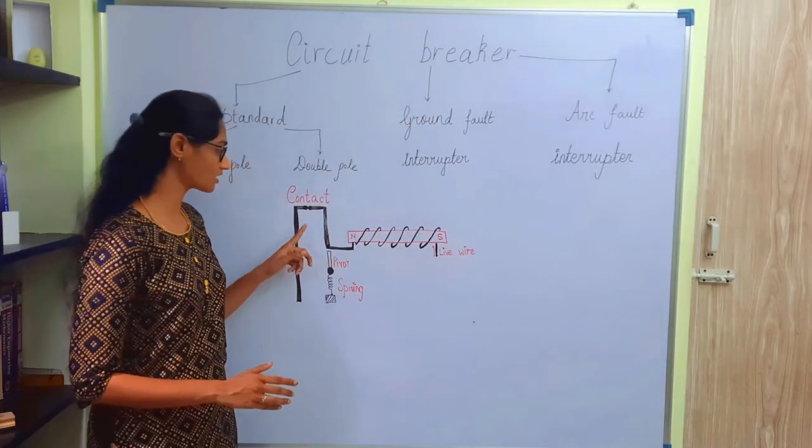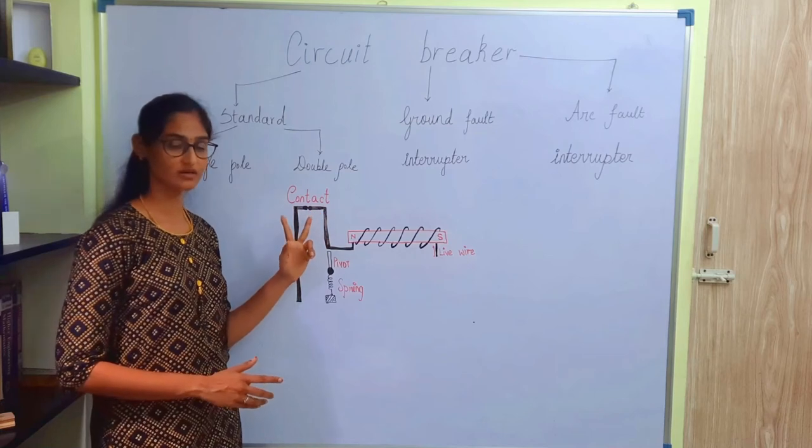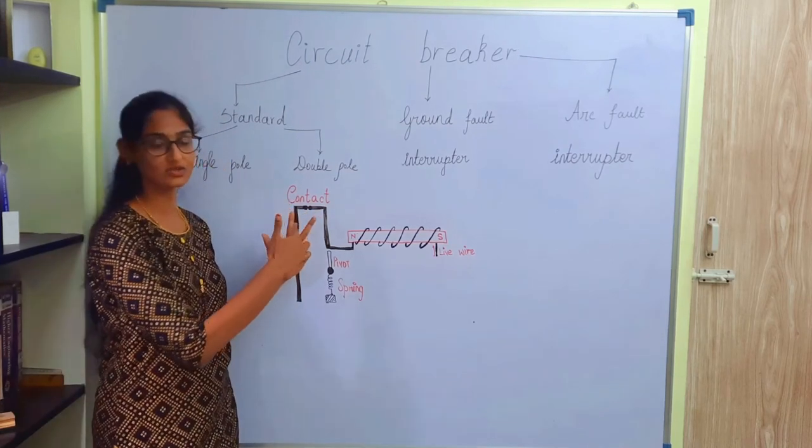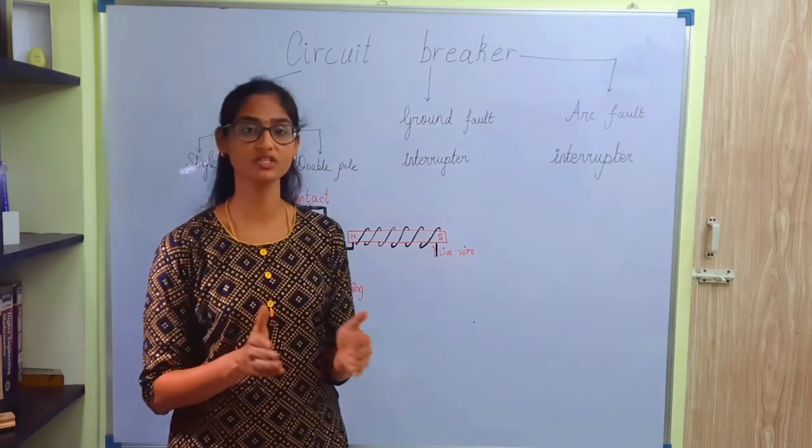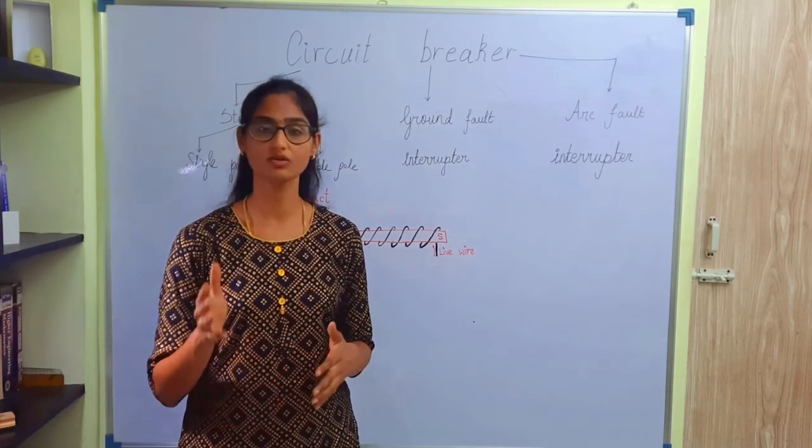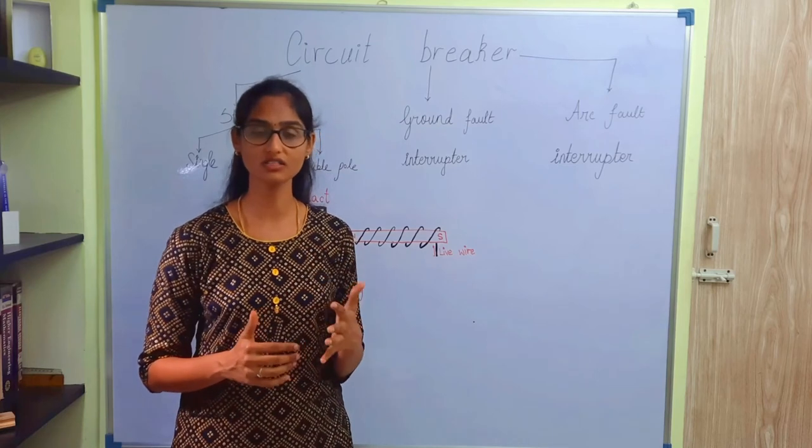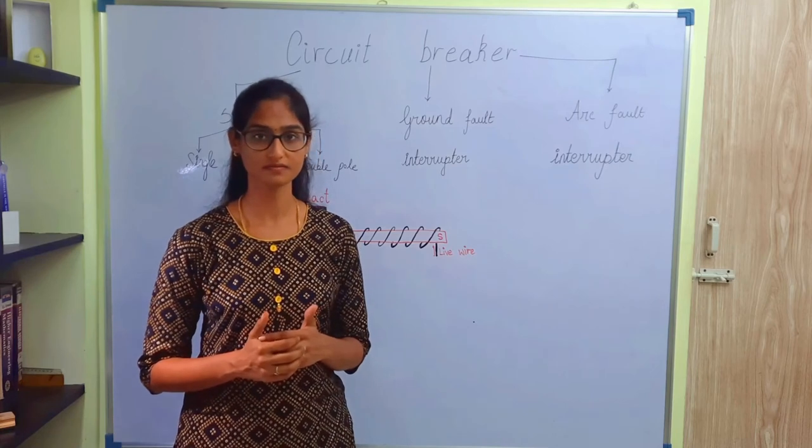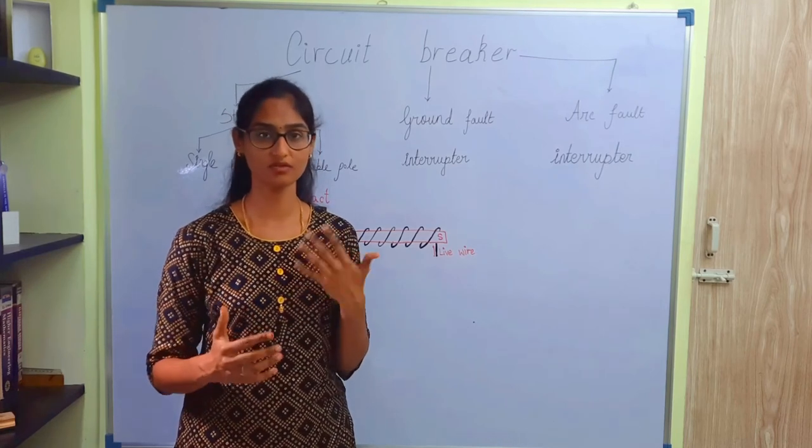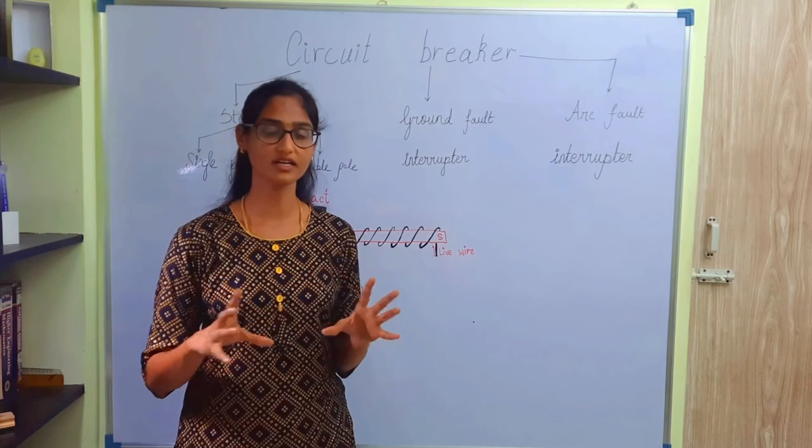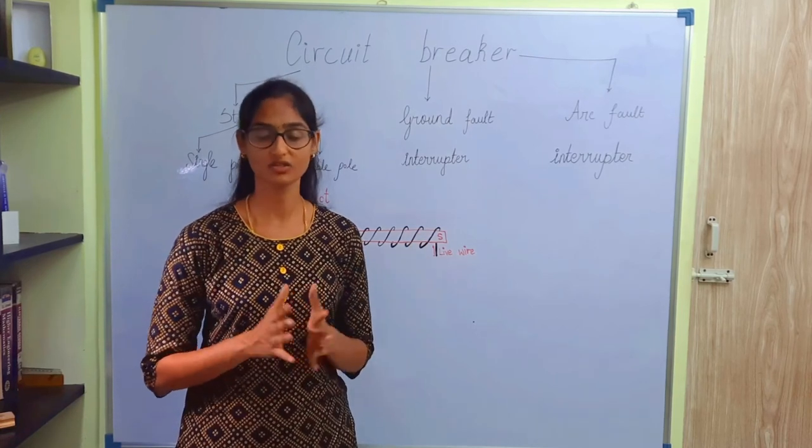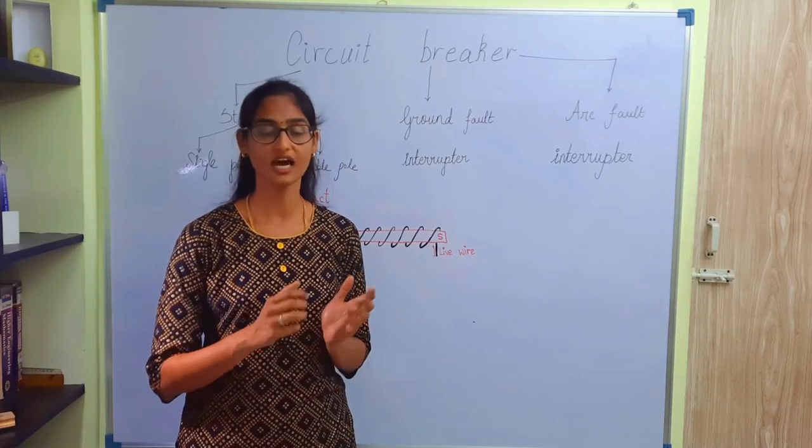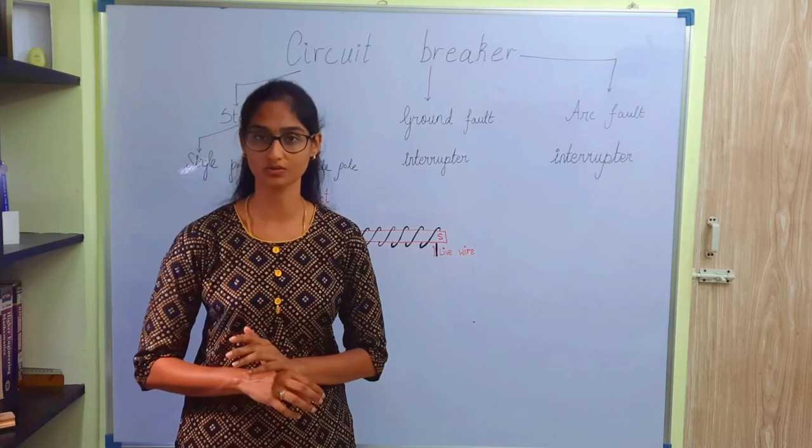Just like how you saw in this circuit, the contacts will get separated mechanically. But now, we are passing this gas into the contact where the power supply meets the load's wires. So what happens? This causes the current flow to get interrupted and then it will save the device. Arcing is a phenomenon where a live wire gets burned due to excessive heat. So all this will be absorbed by the SF6 gas and then it will be pumped into the low pressure reservoir.